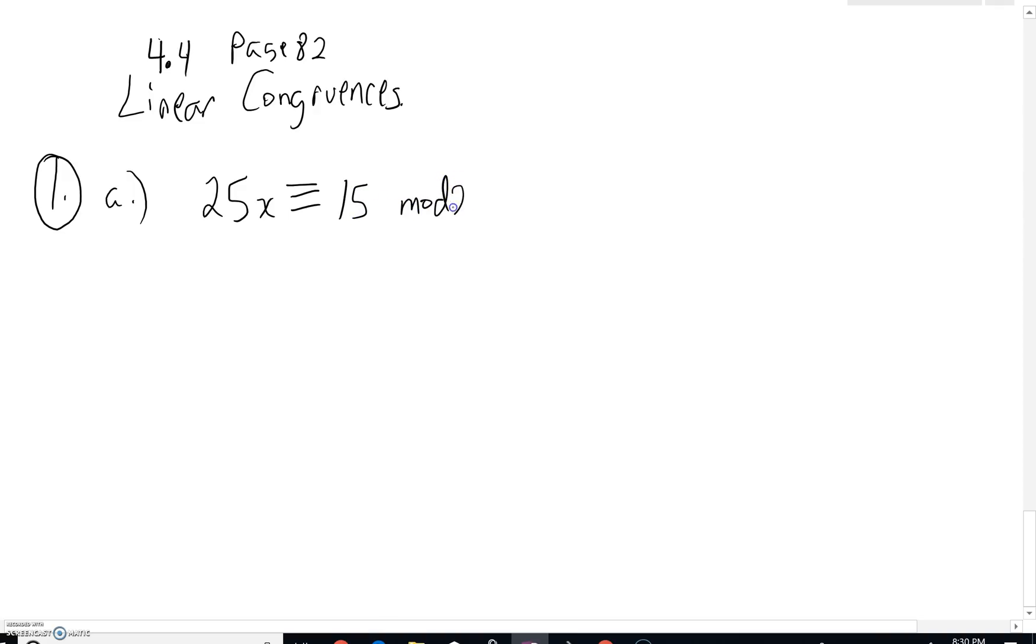So let's see here. If I gave you 25x is congruent to 15 mod 29. One of the things we have to be very much aware of is that you are allowed to divide a linear congruence by a set number, but you got to remember it very well could affect the mod.